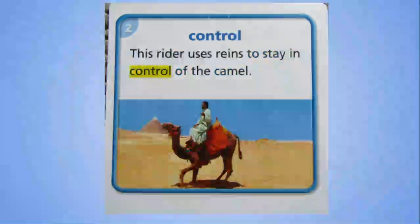Can you think of any other items that you can control? You use a steering wheel to control a car. You use a remote control — it even has the word control in it — to control the TV or maybe a robot or a race car. What other things can you think of that you have control over? Remember, control means that you can affect how something works, what it does.